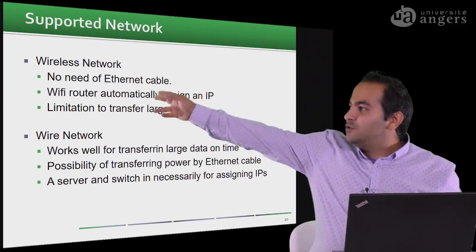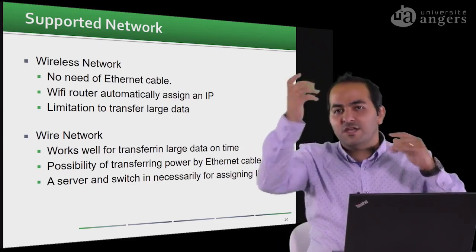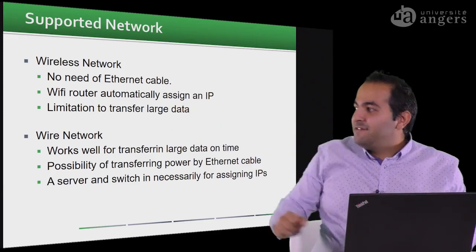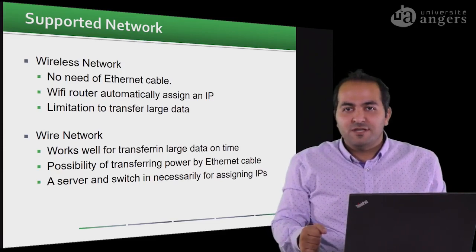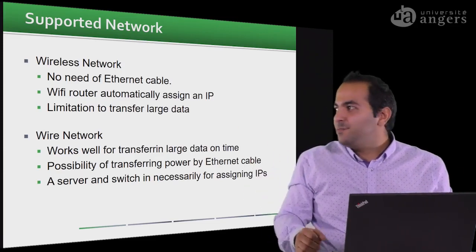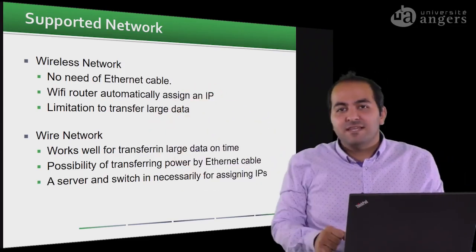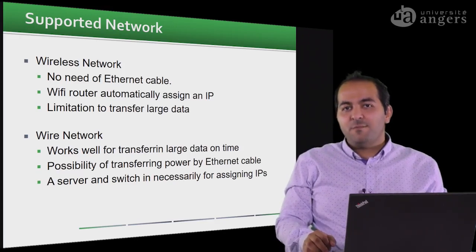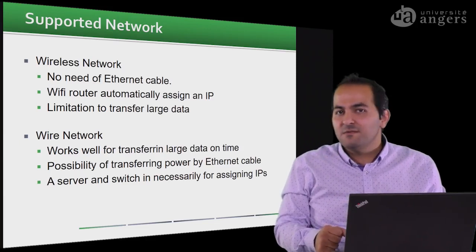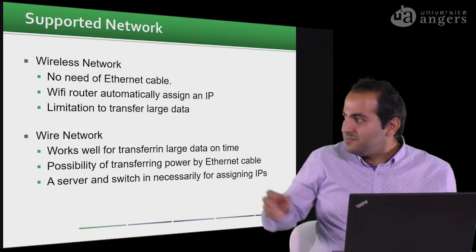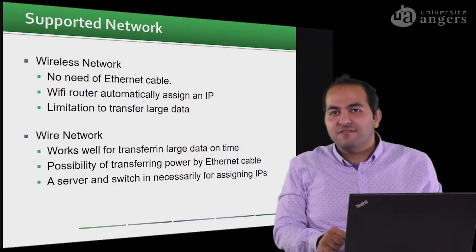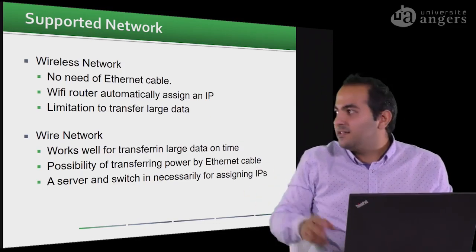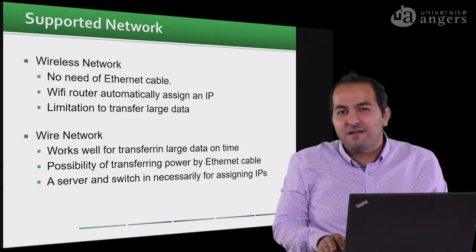For the wireless network, you don't need an Ethernet cable — you can connect your Raspberry Pi anywhere without bringing a cable, and the Wi-Fi router will automatically assign an IP address to each Raspberry Pi when it turns on. However, when you have a large number of Raspberry Pis in your greenhouse or growth chamber, it's difficult to transfer data on time over Wi-Fi because the bandwidth of the Wi-Fi router may not be enough.